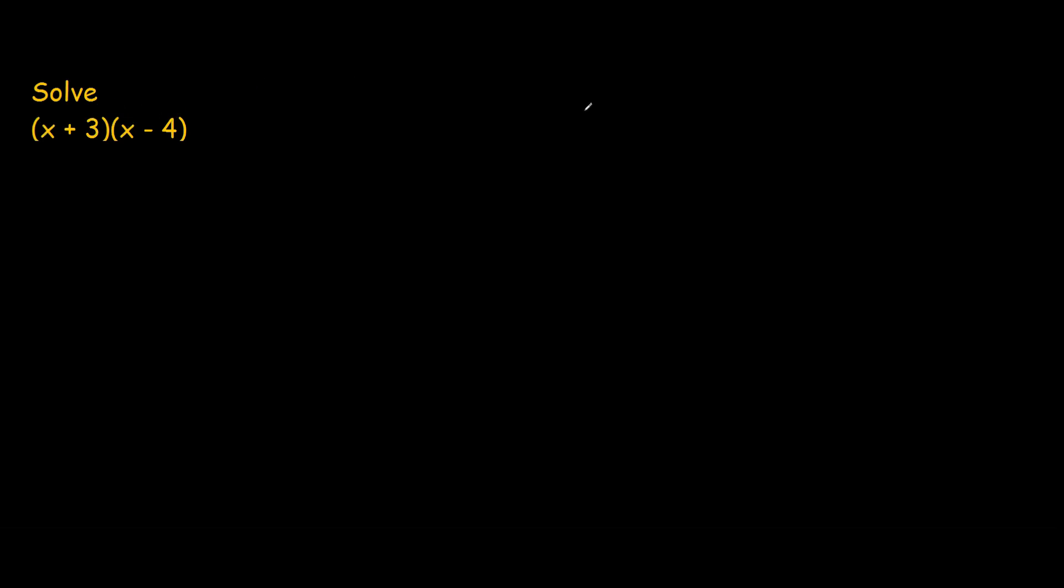In this problem we still use the distributive law, but in this case we do it in two steps. For those who need a refresher on what the law is, if you had, for example, a times bracket b plus c, the law says that to get rid of the brackets you just do a times b plus a times c. So the answer would be ab plus ac.